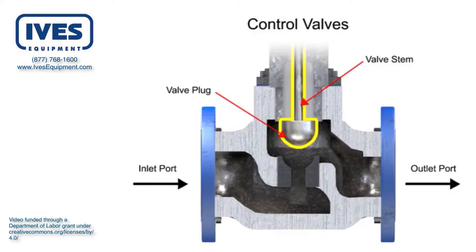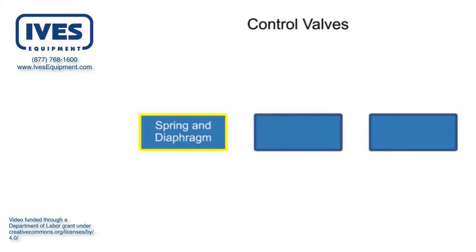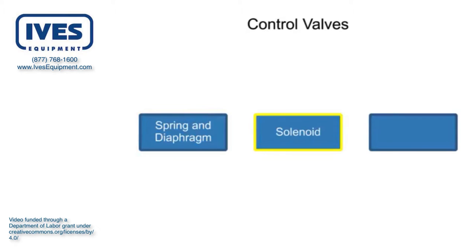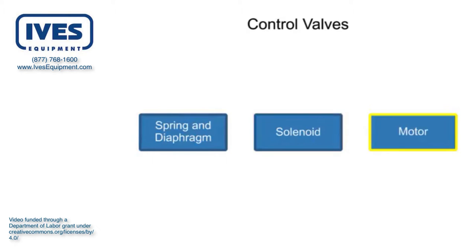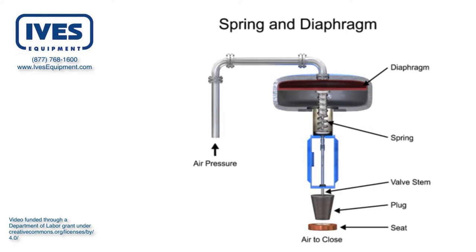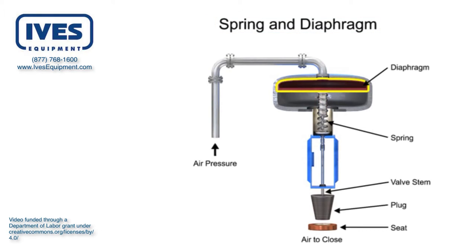Three actuator types are used in control valves and they include spring and diaphragm, solenoid, and motor. As the name suggests, the spring and diaphragm actuator uses a spring and a diaphragm to move the valve stem and plug.